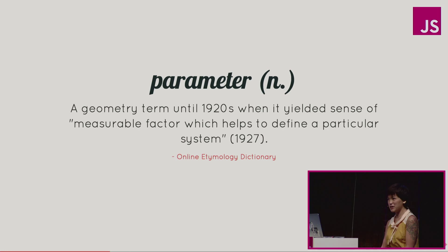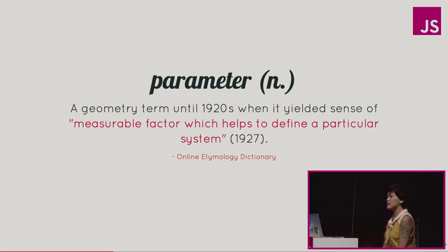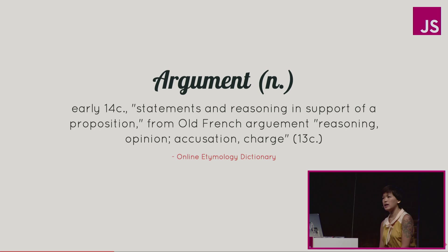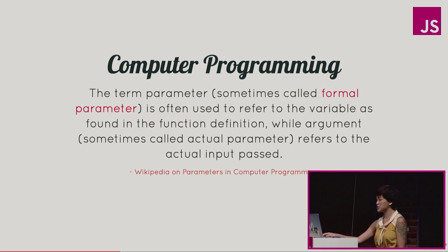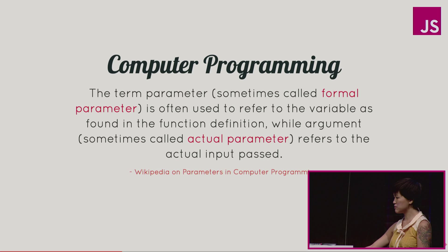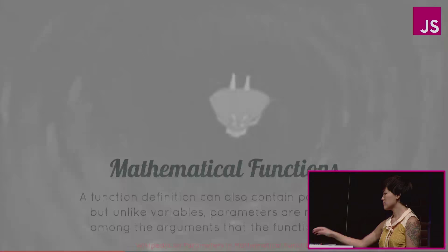I'm not going to tell you, but I'm going to keep going. So 'parameter' in the online etymology dictionary — and etymology is essentially the history of words — says that a parameter is a measurable factor which helps to define a particular system. I think I know which one is the parameter now. But when I search 'argument' on the online etymology dictionary, I find just information about people arguing with each other, which doesn't explain what an argument is. So I check out computer programming on Wikipedia, and I see that the term 'parameter,' sometimes called the formal parameter, is often used to refer to the variable as found in the function definition. While 'argument,' sometimes called the actual parameter, refers to the actual input passed. This definition makes sense to me. But I wonder, why didn't we stick with the terms 'formal parameter' and 'actual parameter'? And to find that out, we've got to go down the rabbit hole.